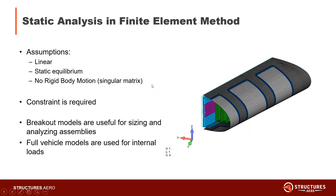To start, I want to briefly go over static analysis using the finite element method. When running a static analysis there are a few assumptions: it's a linear relationship between your loads and displacements, you're in the elastic region for your materials, and your model is in a state of static equilibrium with no rigid body motion. You'd get a fatal error for a singular matrix if you have rigid body motion, because without constraints the matrix would be singular.